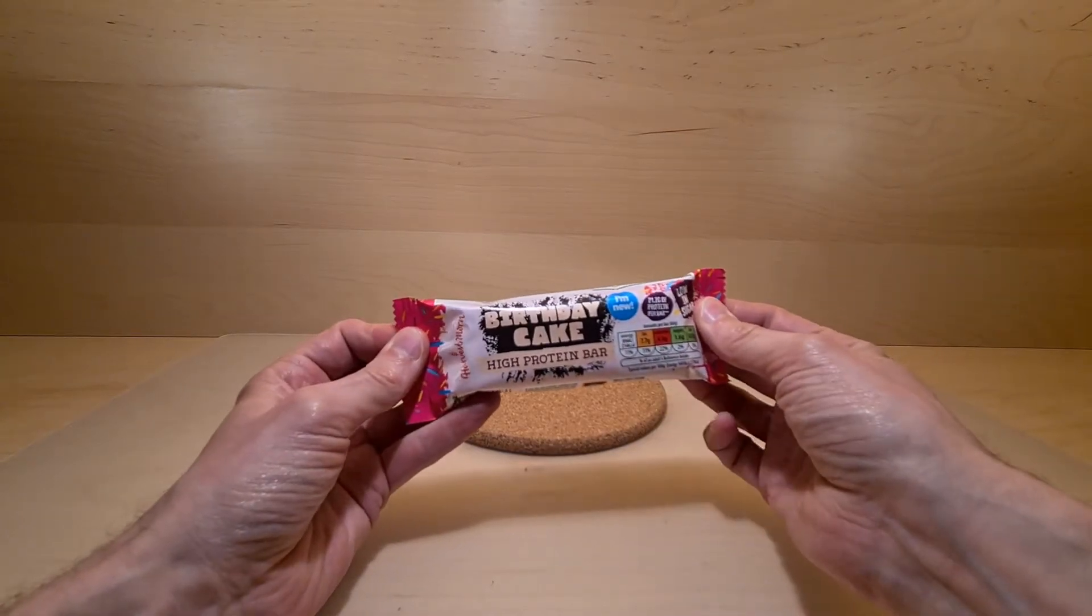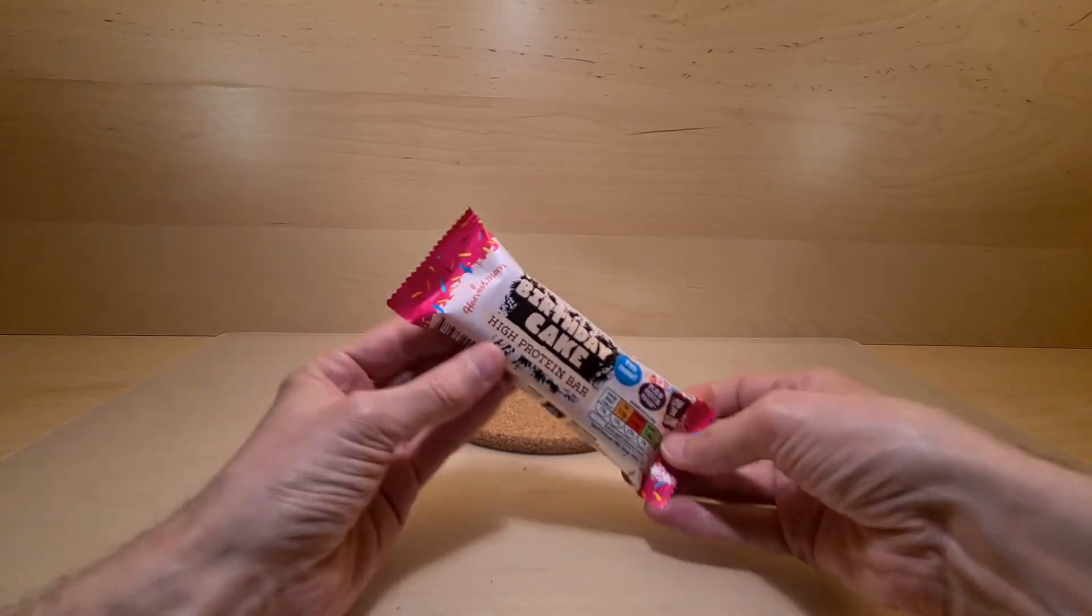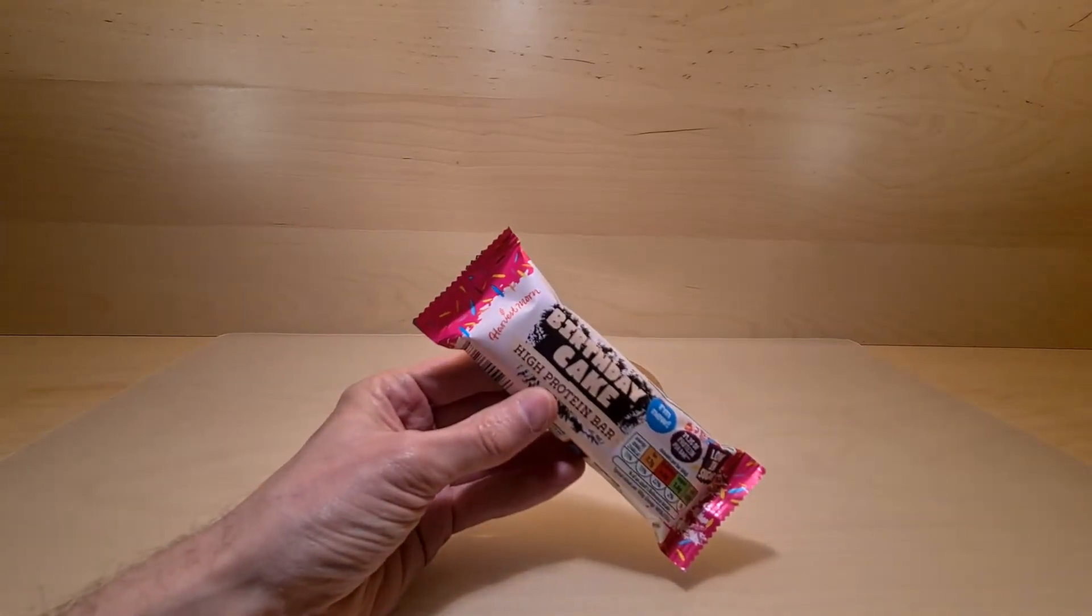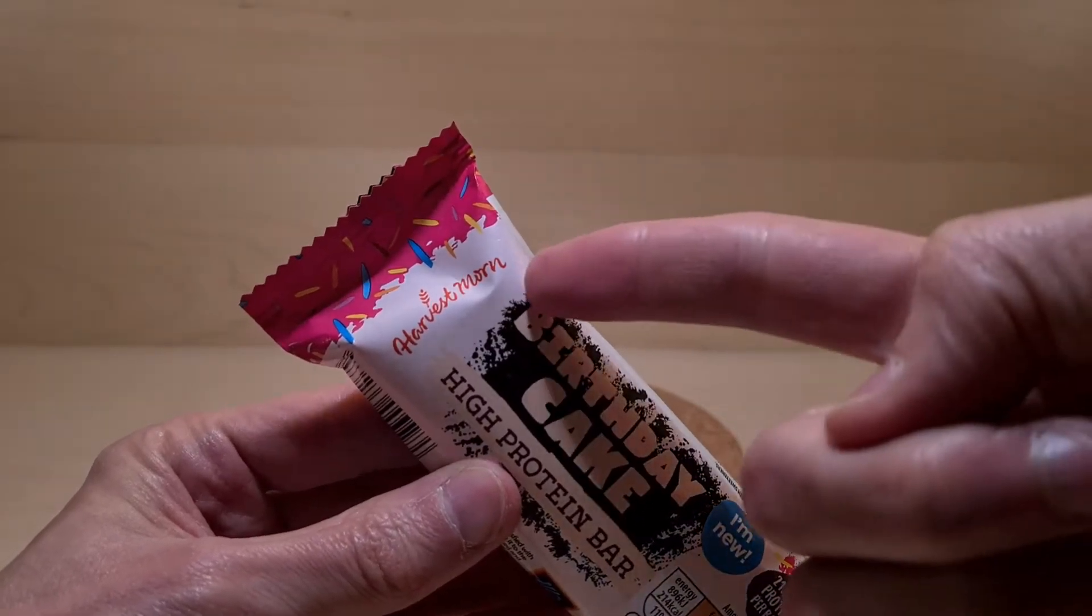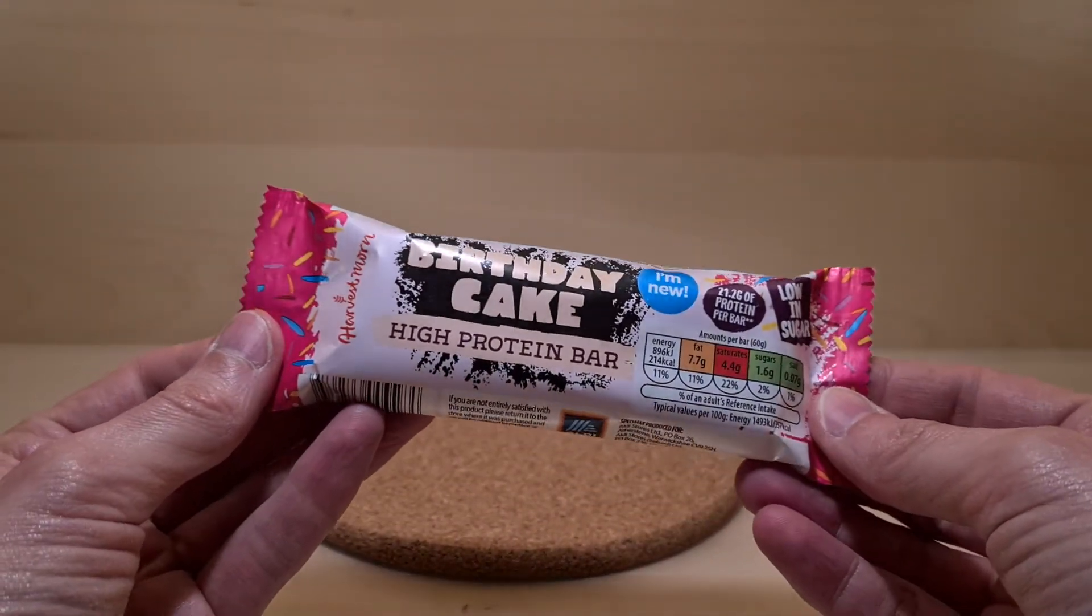A new thing from Aldi, indirectly. This is, what is it, Harvest Morn. You can just about see here, zooming in, Harvest Morn. So it's part of their breakfast range.